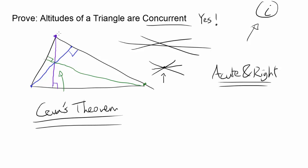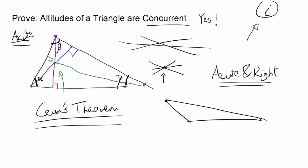So let's get started proving that altitudes of a triangle are concurrent. Let me draw some angles — let's say this angle is alpha, this one is beta, and this one is gamma. I'm going to first prove it for the case of an acute triangle, so all of the altitudes stay inside the triangle. In the case of an obtuse triangle, you'd have to extend the side and the altitude would be outside the triangle. But for an acute triangle, all the altitudes are inside. I'm also going to label the sides: this side is X, this side is Y, and this side is Z. Now let's label some partitions.